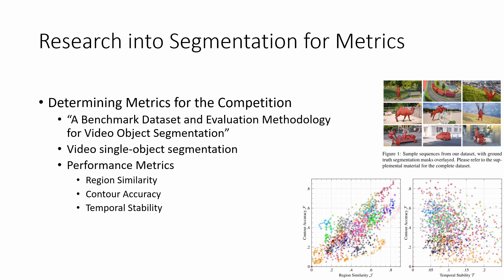Region similarity is important for checking if the neural network is consistently and accurately localizing the object in the foreground. Contour accuracy evaluates the error in the shape of the generated annotations against the ground truth to see if neural networks are accurately segmenting the shape of the object. Temporal stability examines if the video annotations are staying relatively stable over the course of the video. These three metrics were combined into scores of contour accuracy versus region similarity and contour accuracy versus temporal stability, visible in graphs on the slide.